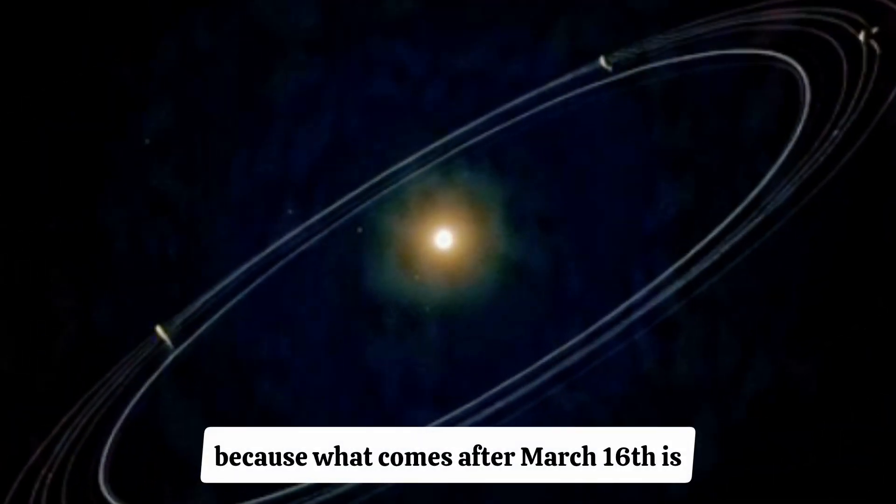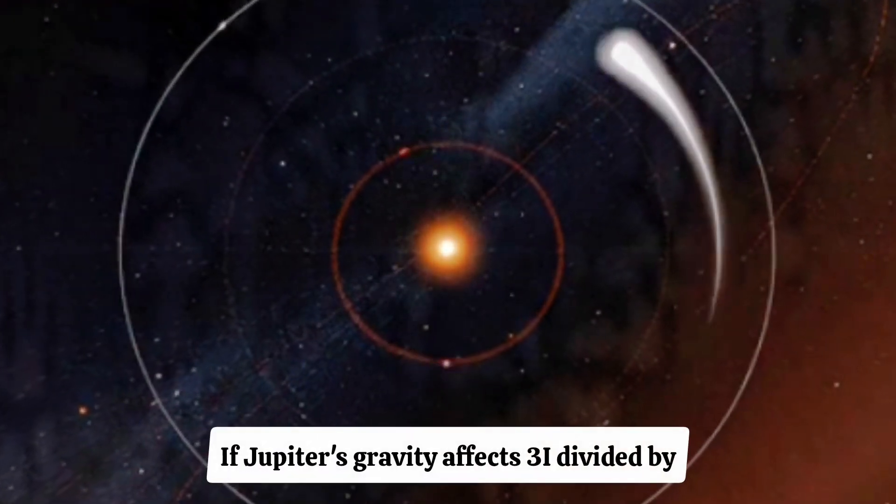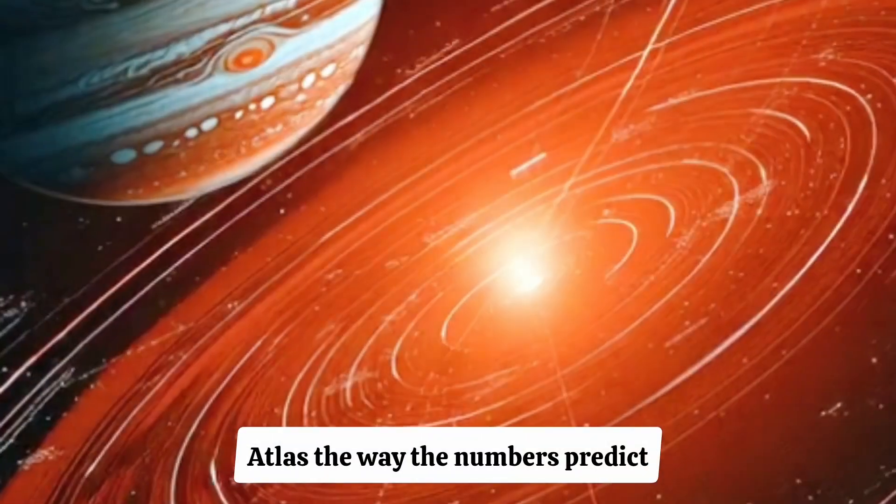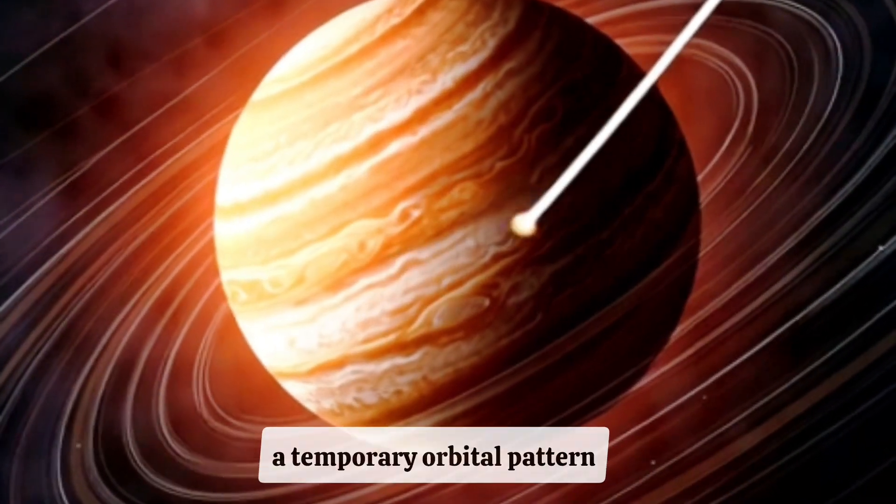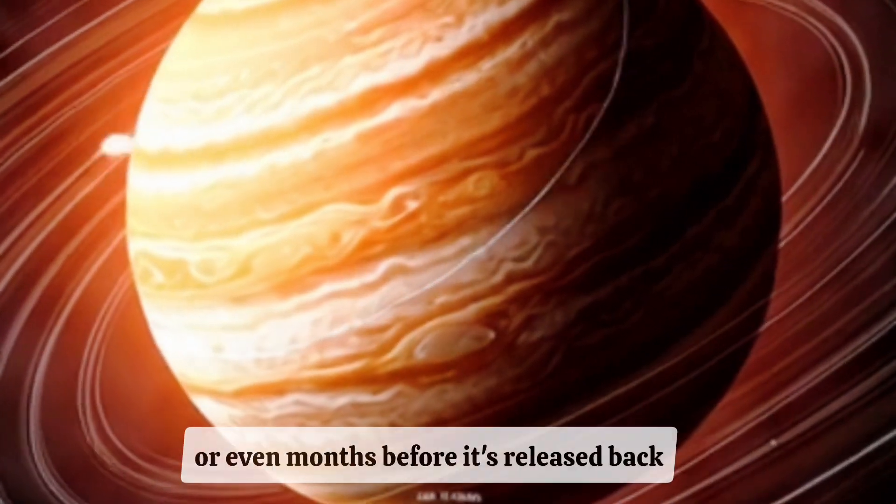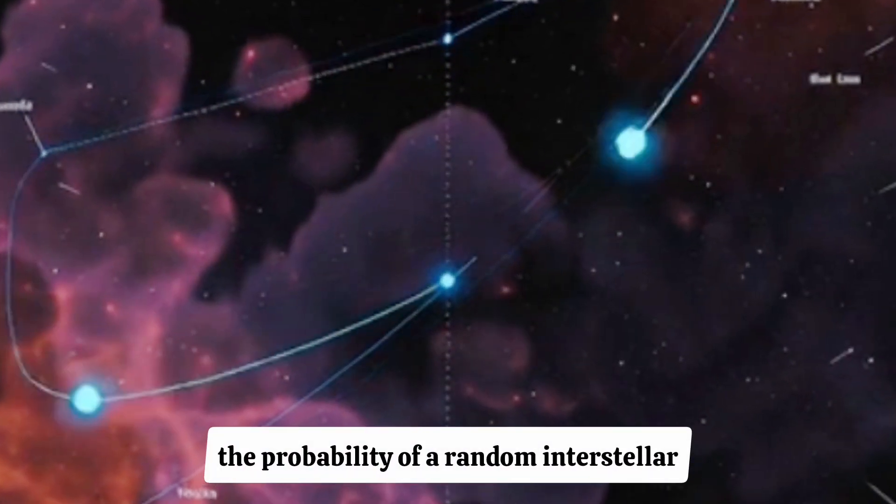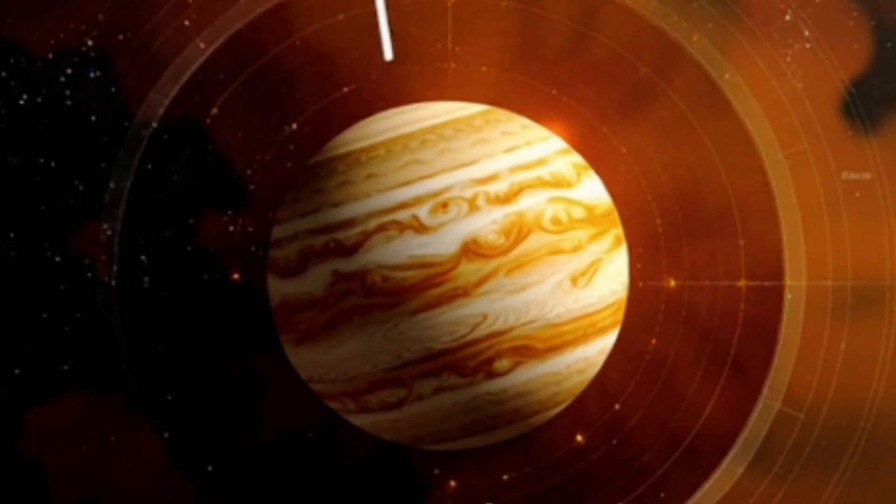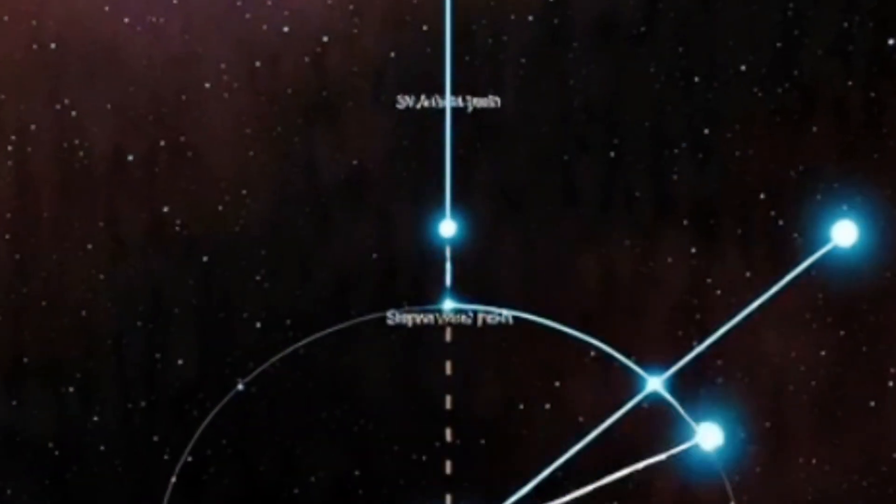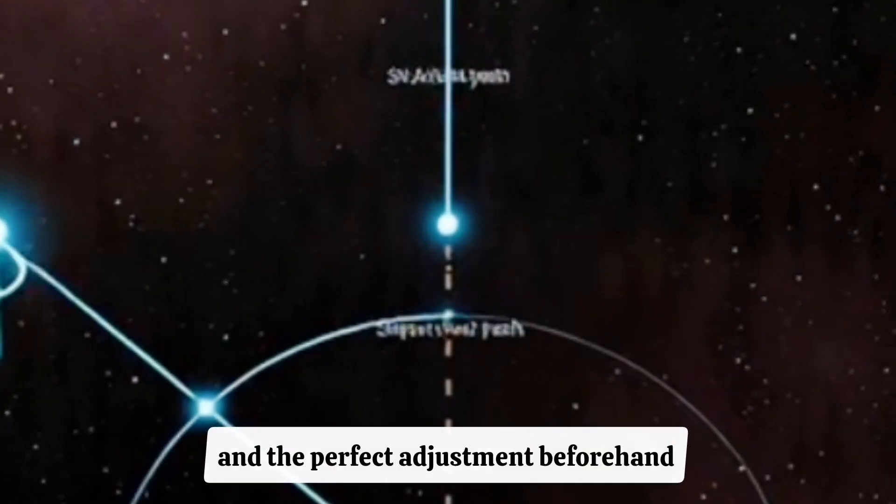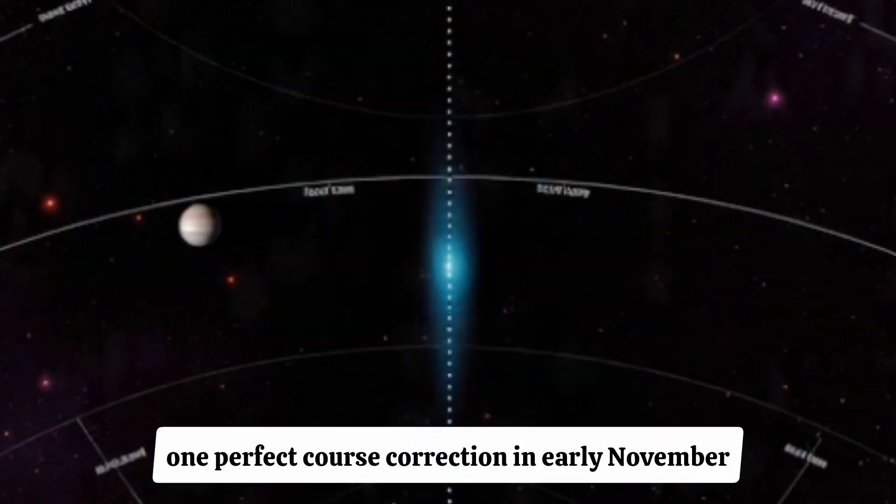Now let's move deeper, because what comes after March 16th is where things get truly bizarre. According to the model released last night, if Jupiter's gravity affects 3i divided by Atlas the way the numbers predict, the object won't simply pass by. Instead, it could be redirected into what's being called a transient resonant loop, a temporary orbital pattern that keeps the object near Jupiter for weeks or even months before it's released back toward the outer solar system. To understand how insane that is, the probability of a random interstellar object falling into a resonant loop around Jupiter is so low that most astronomers don't even bother calculating it. It would require the perfect distance, the perfect speed, the perfect angle, the perfect gravitational timing, and the perfect adjustment beforehand. And yet, as of today's models, everything lines up. And remember, this object already performed one perfect course correction in early November.